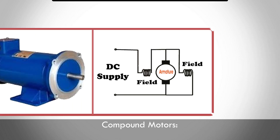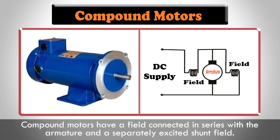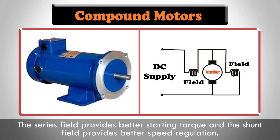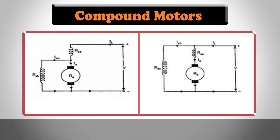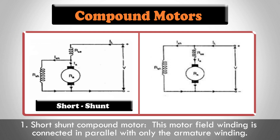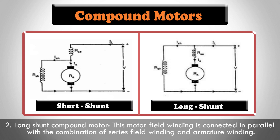Compound motors have a field connected in series with the armature and a separately excited shunt field. The series field provides better starting torque and the shunt field provides better speed regulation. Compound motors are further divided into two types: 1. Short shunt compound motor — the field winding is connected in parallel with only the armature windings. 2. Long shunt compound motor — the field winding is connected in parallel with the combination of the series field winding and armature winding.